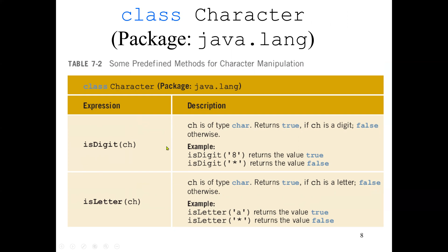Now for the character methods: we have isDigit, which takes a parameter ch. The ch should be of type character. In Java, a character means only one single symbol or digit. For example, isDigit('8') — 8 is a digit, so it returns true. isDigit('*') returns false. isDigit('A') or isDigit('B') returns false. The isDigit method returns true if the character is a digit. In Java, the character data type may be only one single symbol, digit, or character.